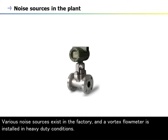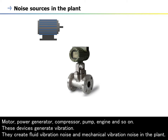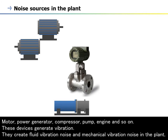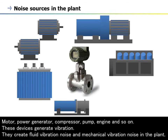Various noise sources exist in the factory, and a vortex flow meter is installed in heavy-duty conditions. Motors, power generators, compressors, pumps, engines, and so on — these devices generate vibration. They create fluid vibration noise and mechanical vibration noise in the plant.